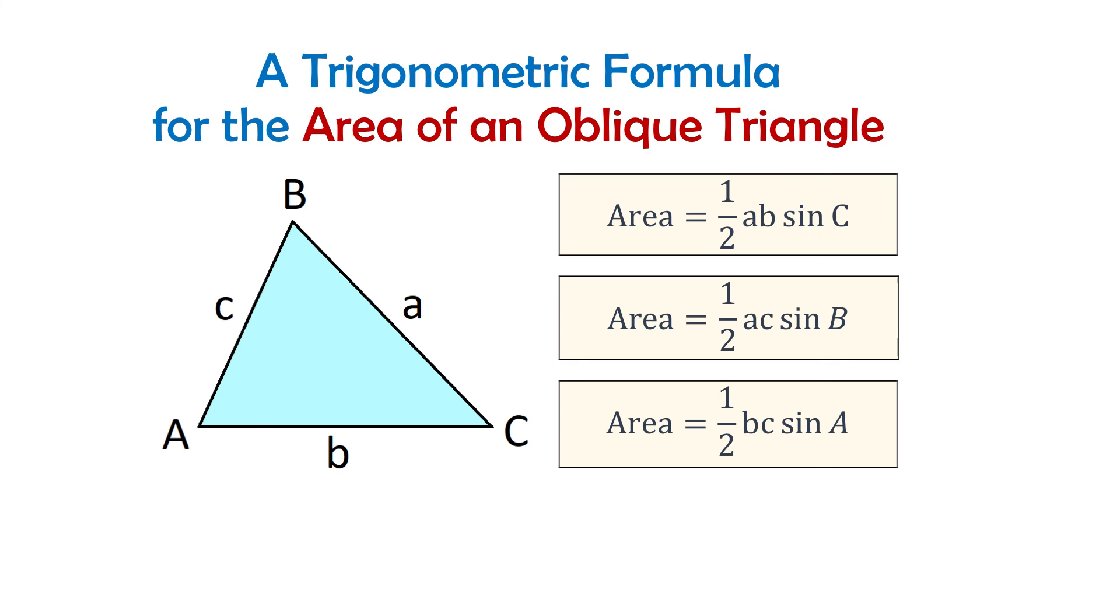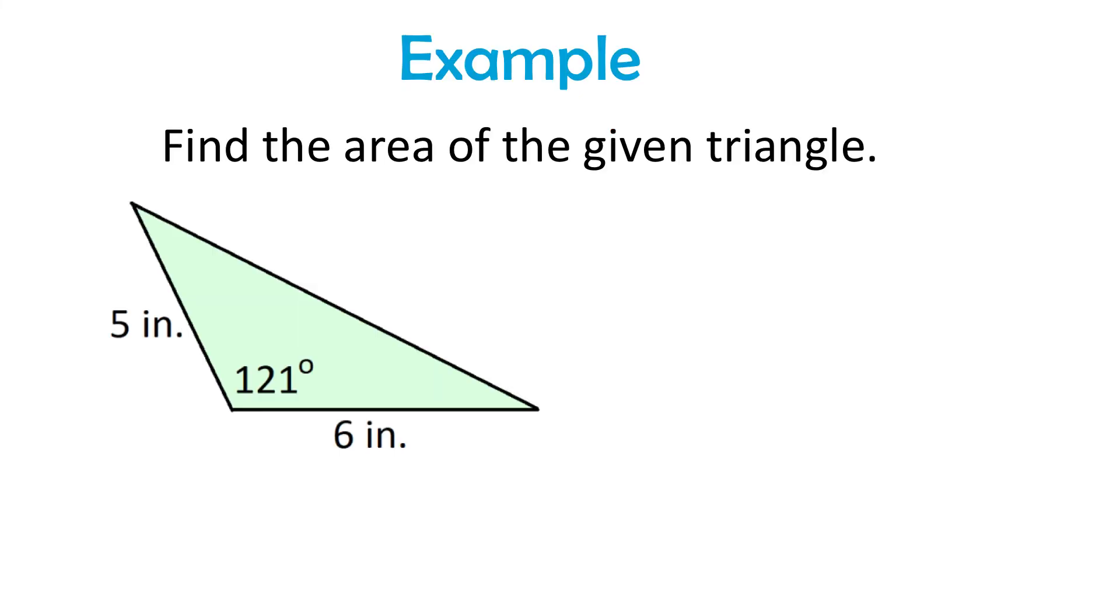Now let's solve one example. Here we have a triangle with one side of five inches, the other one of six inches, and the included angle of 121 degrees.